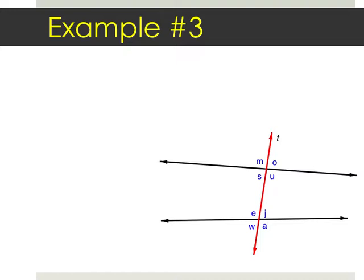Mila, which ones are alternate exterior? M and A, O and W. Oh, good. So corresponding, alternate interior, alternate exterior. Genevieve, corresponding interior angles. Sorry, not corresponding, consecutive interior. C, I, A. S and E, and U and J. Good. Consecutive exterior. Rex, in before you hurt yourself. M, W and O and A. Good. Is that all of them? Did you miss any? Okay. There you go.